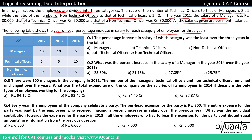The table shows year-on-year percentage increase in salary for each category for three years. In 2011, salary of a manager was Rs 80,000. In 2012 it increases by 10%, in 2013 again by 10%, in 2014 by 5%. For technical officers, salary in 2011 was Rs 50,000, increasing by 5% in 2012, 5% in 2013, and 10% in 2014. The percentage increase applies to the salary of the previous year, so 2012 salary = 80,000 × 1.1.